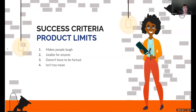Our success criteria — what are we defining as success? The jokes that are generated have to make people laugh. The website we create has to be usable by everybody — very simple and easy to use. The jokes don't have to be factual; we don't care if they're factual, they just have to be funny. And we don't want to generate any mean jokes. We don't want people to feel hurt. We're all about positivity and reducing stress.